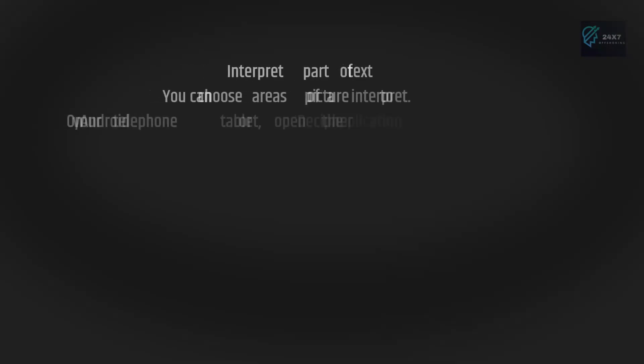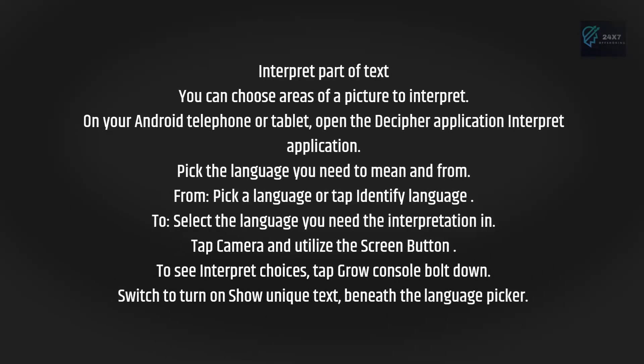You can also interpret part of text by selecting areas of a picture. On your Android telephone or tablet, open the Translate application. Pick the language you need to translate to and from. From, pick a language or tap Detect Language. To, select the language you need the interpretation in. Tap Camera and use the shutter button. To see interpret options, tap Expand Keyboard arrow down.